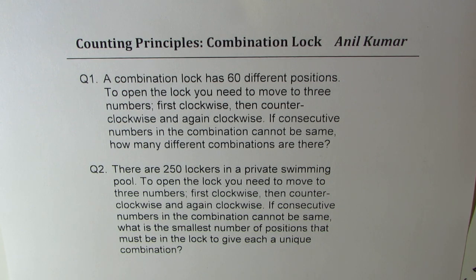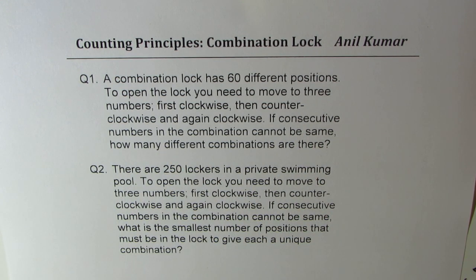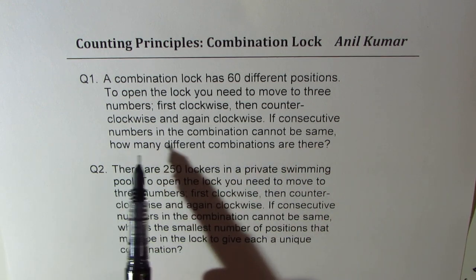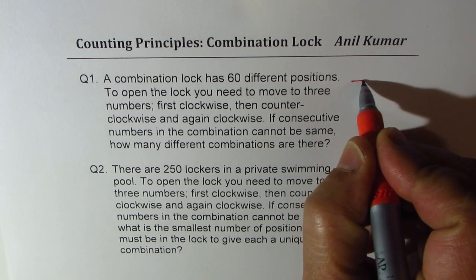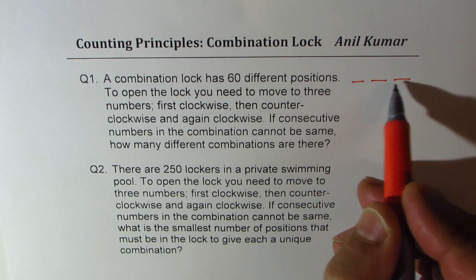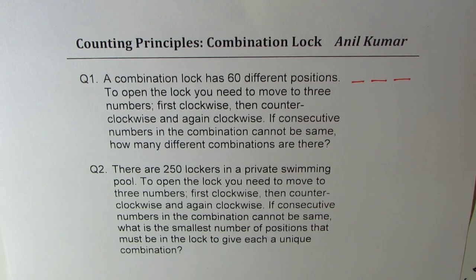So as you can see, both are very much related questions. The term consecutive numbers means numbers which come one after the other — for example, 10 and 11 are consecutive numbers. So it says consecutive numbers in the combination cannot be the same, meaning for three positions: first and second cannot be same, and second and third cannot be same.